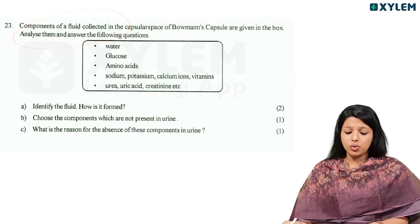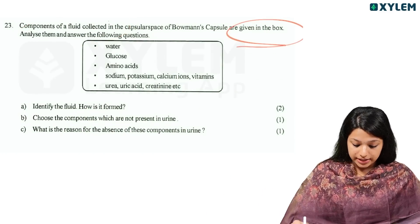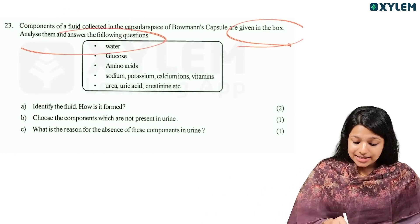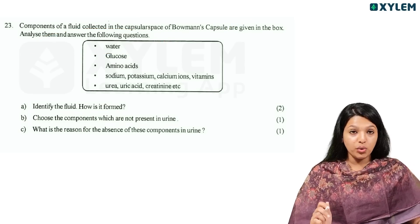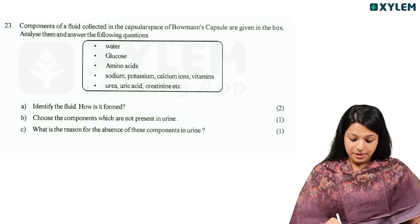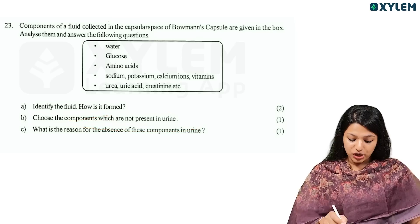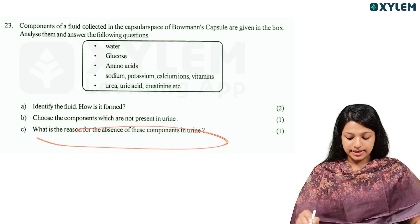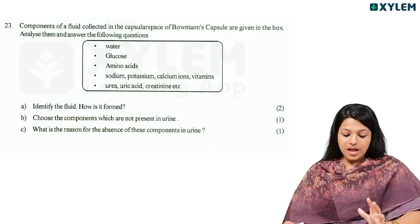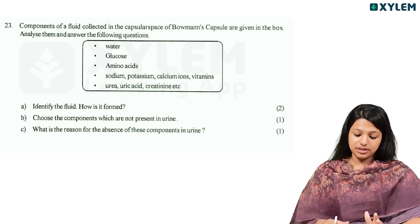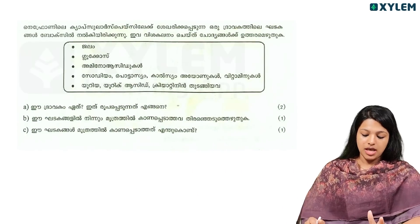Components of fluid collected in the capsular space of Bowman's capsule are given in the box. Analyze them and answer: choose a component which is not present in urine and give the reason for its absence. The components listed include water, glucose, amino acids, sodium, potassium, and urea.